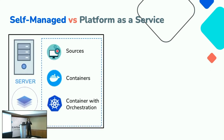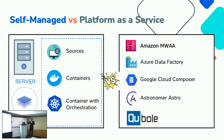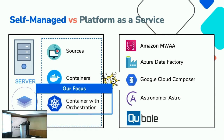For the sake of this talk, anywhere that you deploy — any servers, any platform, any of the variants on the left-hand side — I'm calling a self-managed instance. The managed service offerings include Amazon Managed Workflows for Apache Airflow, Azure Data Factory, Google Cloud Composer, Astronomer's Astro, and Qubole. Today I'm going to focus only on deploying Apache Airflow with Kubernetes as the orchestration layer.